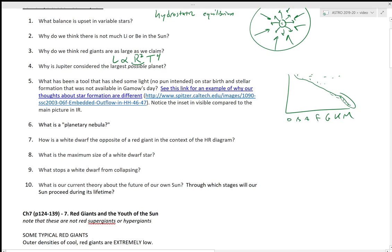What is a planetary nebula? I explained that in the previous video. How is a white dwarf the opposite of a red giant in the context of the HR diagram?